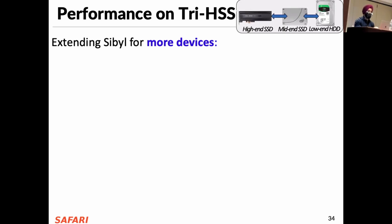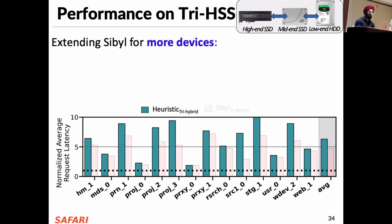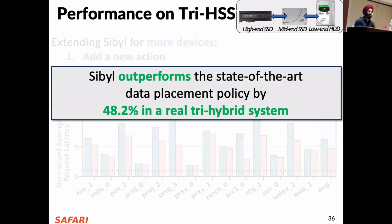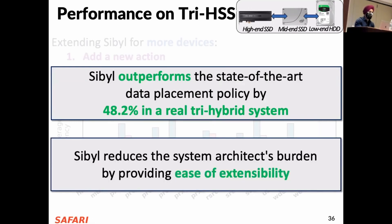We also evaluate the extensibility of Sybil to more devices. To extend to a tri-hybrid system, we only needed to add a new action in the action space and add the remaining capacity of the new device as a state feature — that's it, and Sybil figured out the policy on its own. In contrast, the heuristic-based extension of the CDE policy required significant effort: handling all different eviction and promotion cases and tuning all the heuristic parameters. In the end, Sybil outperformed this state-of-the-art policy by 48.2% in a real tri-hybrid system. Sybil reduces the system architect's burden by providing ease of extensibility.